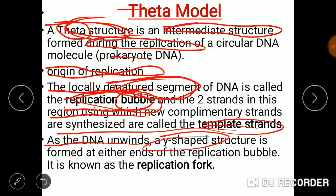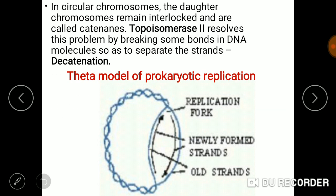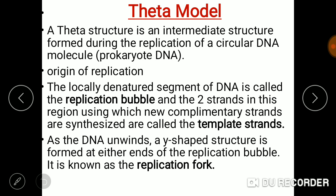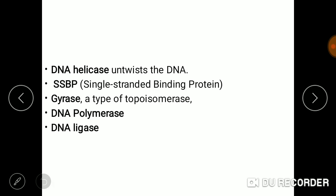At either end of the replication bubble, a Y-shaped structure is formed. This is the double-stranded DNA with the replication bubble, and the Y-shaped structures at the ends are called replication forks. The Y-shaped structures are also referred to as the replication bubble region.